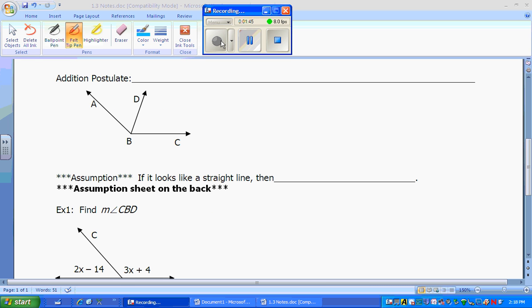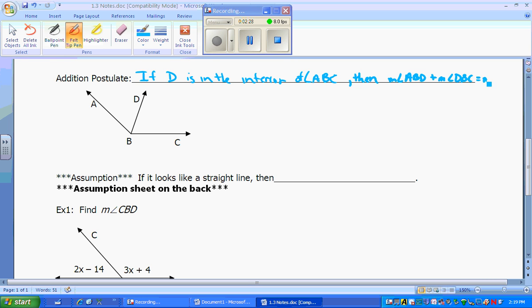We're going to start with the addition postulate. It hasn't been proven, but obviously it's something that will work every time. Here's a picture example. The addition postulate says if D is in the interior of angle ABC, then the measure of angle ABD plus the measure of angle DBC would equal the measure of angle ABC. The two small pieces have to add to equal the bigger one.